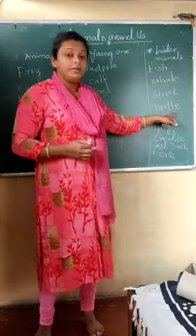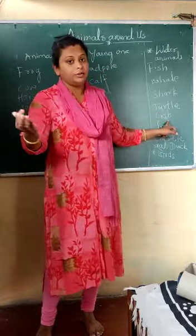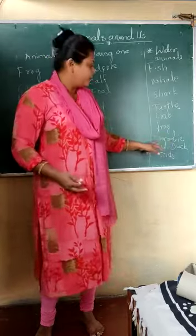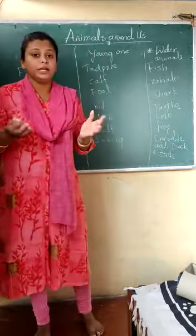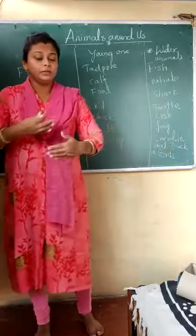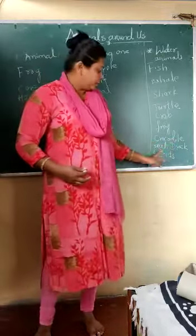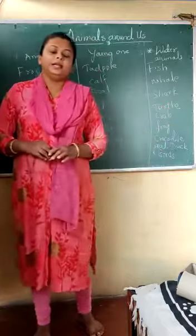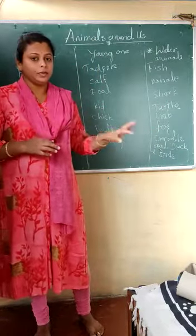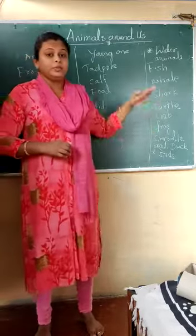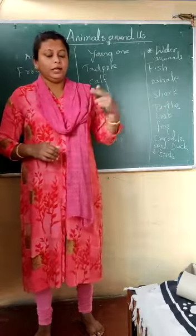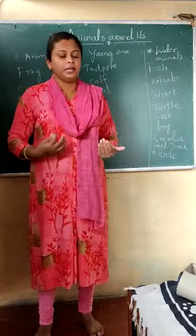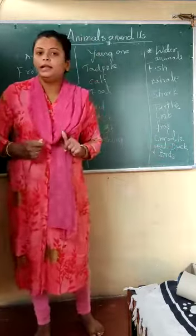For example, turtle can be seen on the land as well as inside the water. Crab can be seen on the land and inside the water. Frog we can see around our houses and sometimes in the water. Crocodile will come up to the surface of the water and also stay fully inside it. Seal is also an aquatic animal that lives on land and in water. The bird duck also lives both on land and on the water. Animals that can live in both water and on the earth are called amphibians, because they have the property of adjusting their body in both environments.